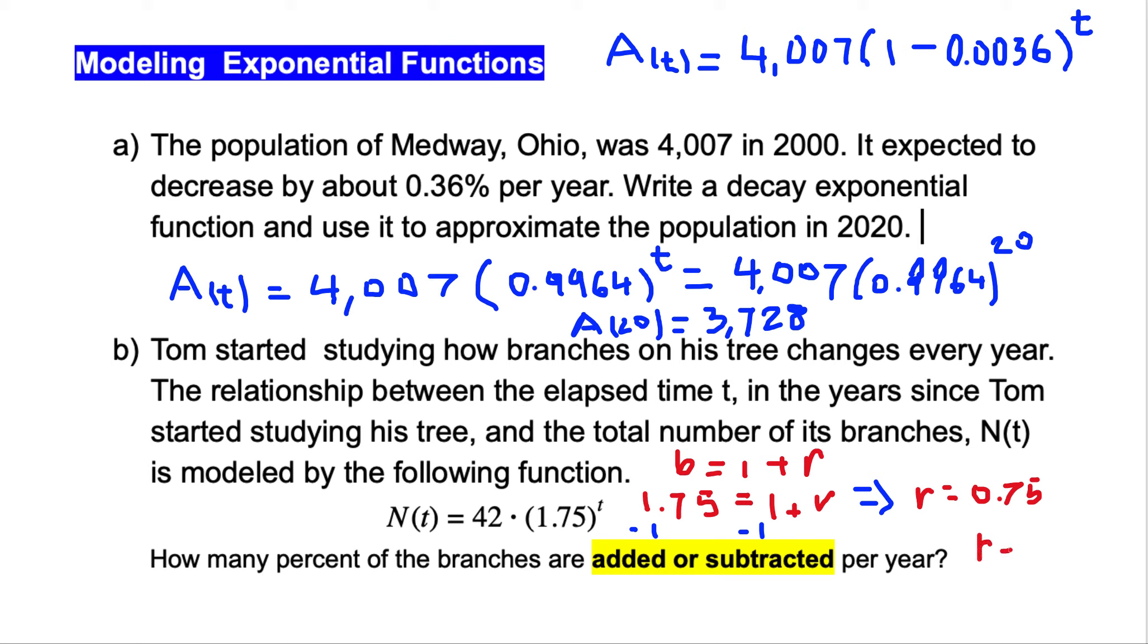R is equal to 75%. So we are adding the percentages, we add 75%. Each year, the tree's branches are going to add 75%.